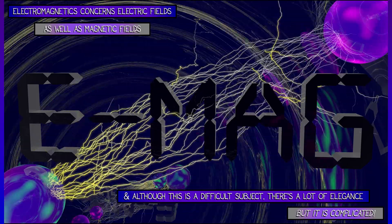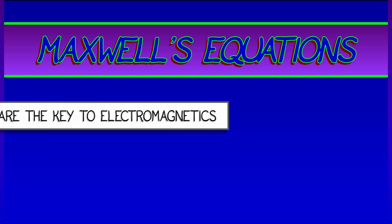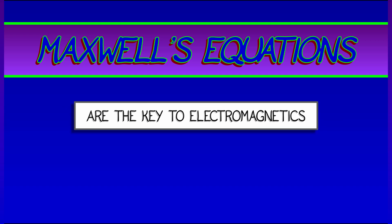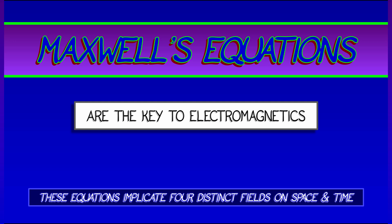But things do get complicated. The key to understanding electromagnetics is something called Maxwell's equations. This is a system of equations that tell you what is happening in electromagnetics, and we are going to have to take some time to figure out all the different components behind Maxwell's equations.